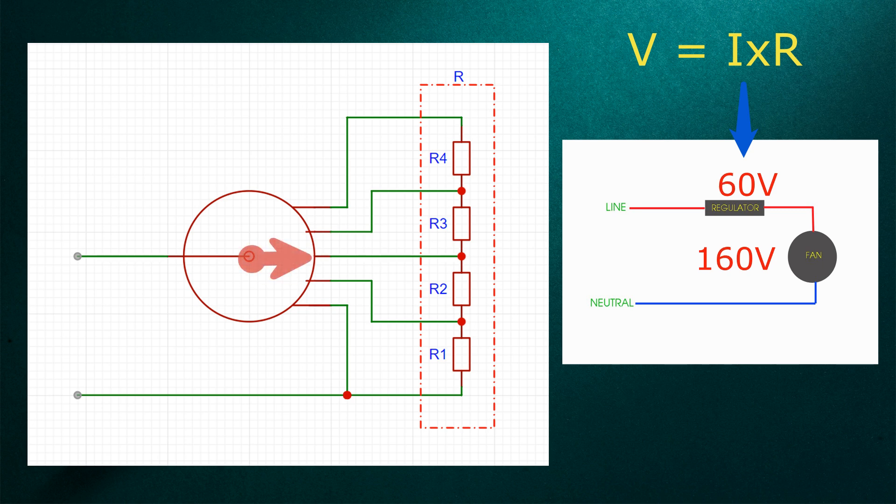When we set the switch to the next positions, the fan speed decreases due to the increase in resistance value.